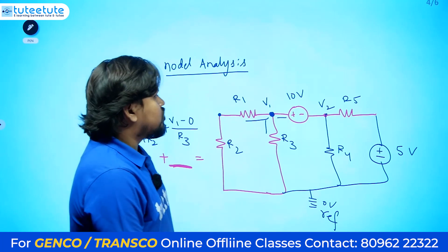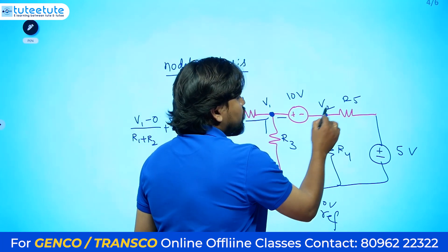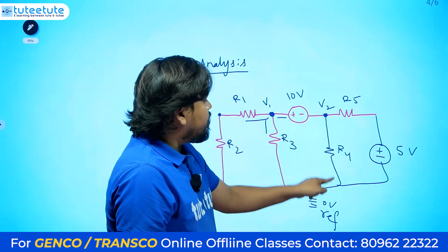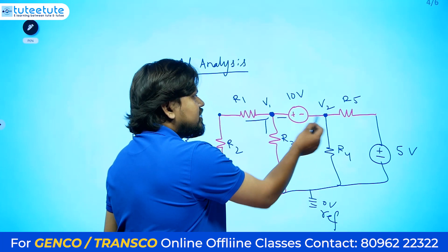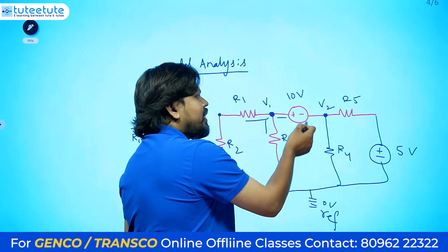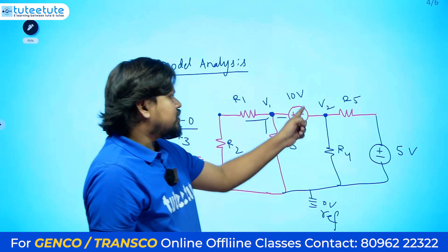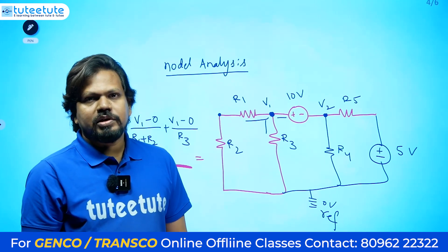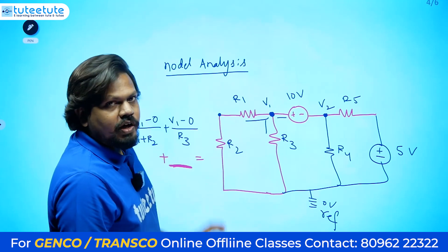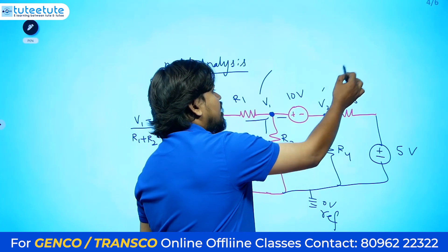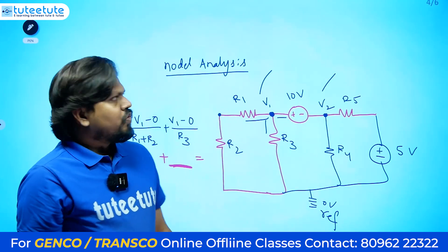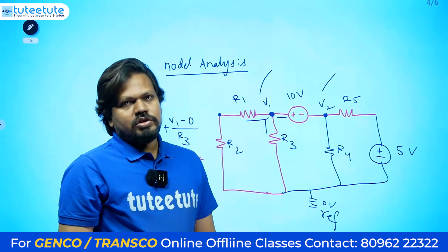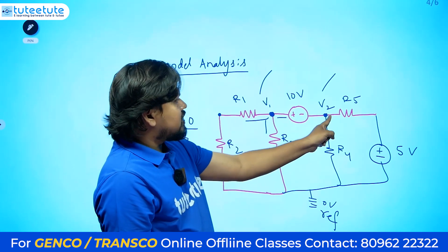Similarly, for node V2, we try to write: V2 minus 5 minus zero divided by R5, plus V2 minus zero divided by R4, plus the current V2 minus V1 divided by the resistance between them. But there is no resistance — only a voltage source with zero internal resistance — so we get an infinite current, and this node equation also cannot be written. Whenever only a voltage source is between the nodes, neither equation can be written directly.